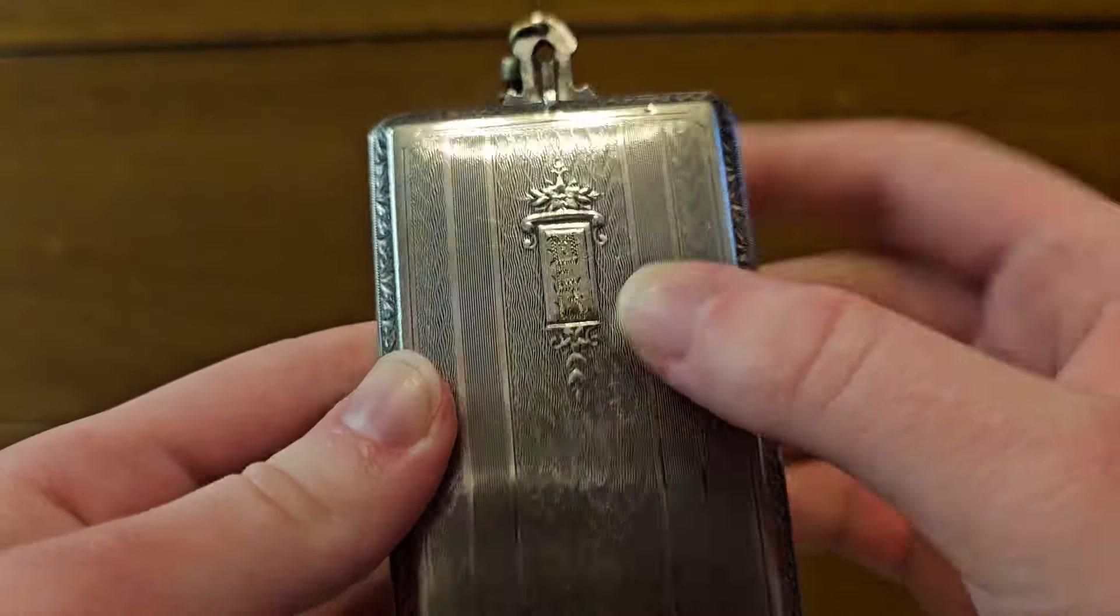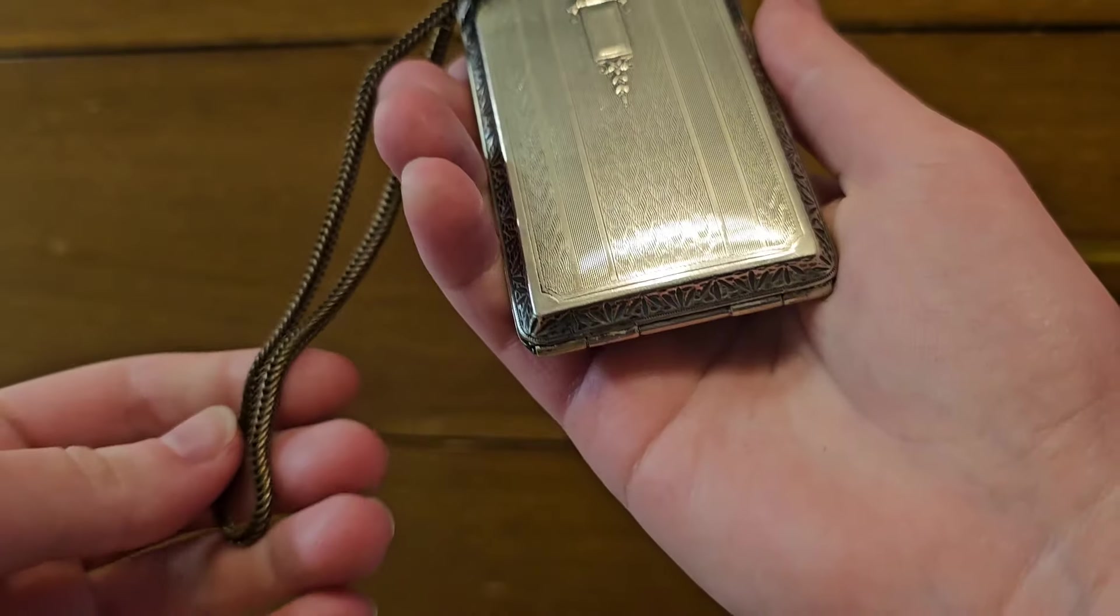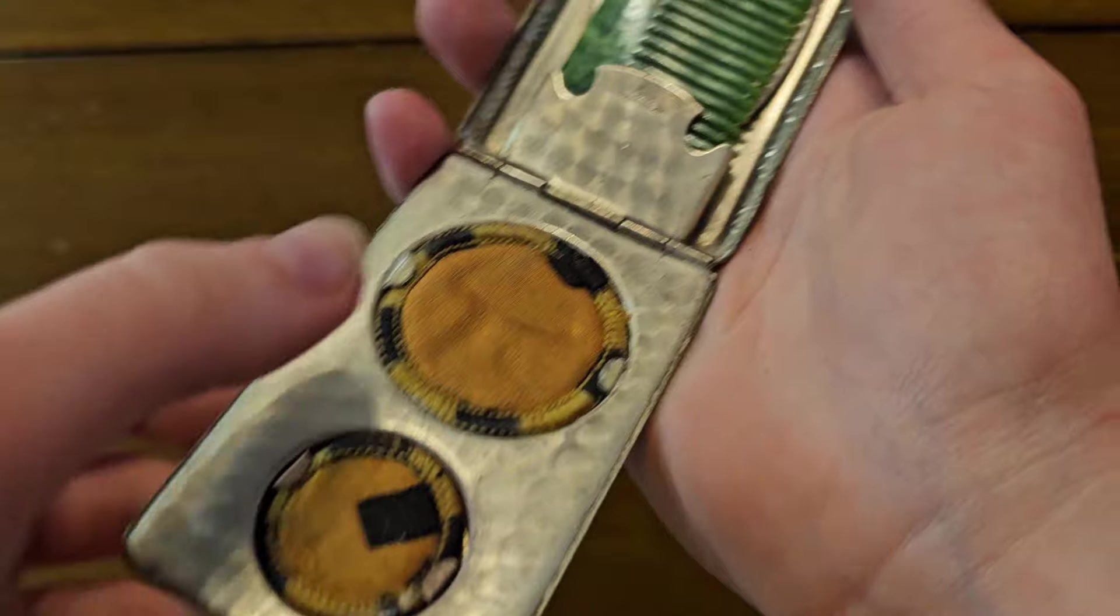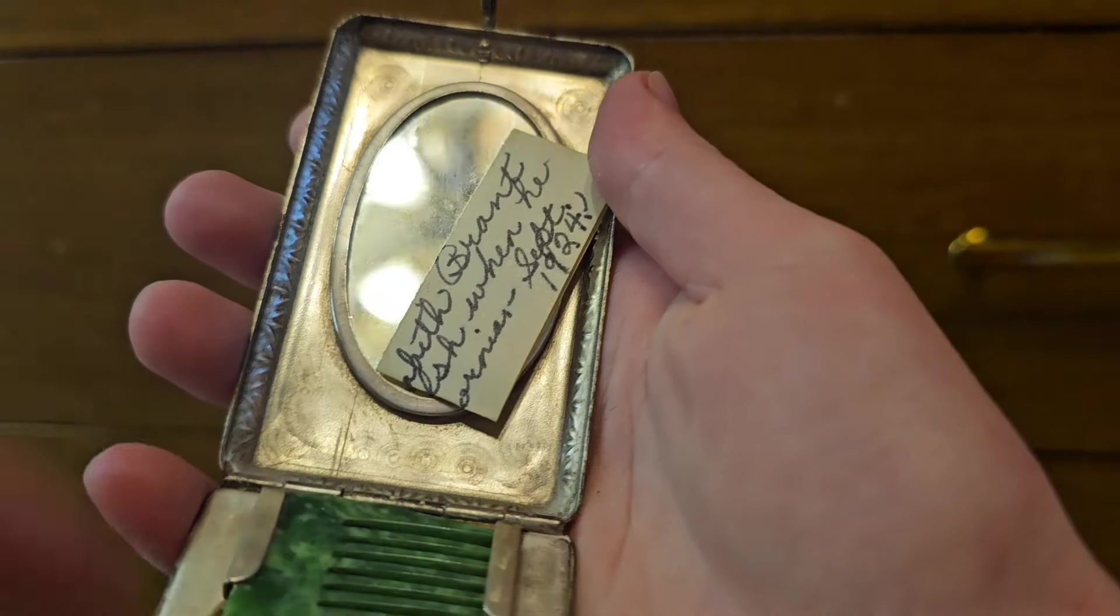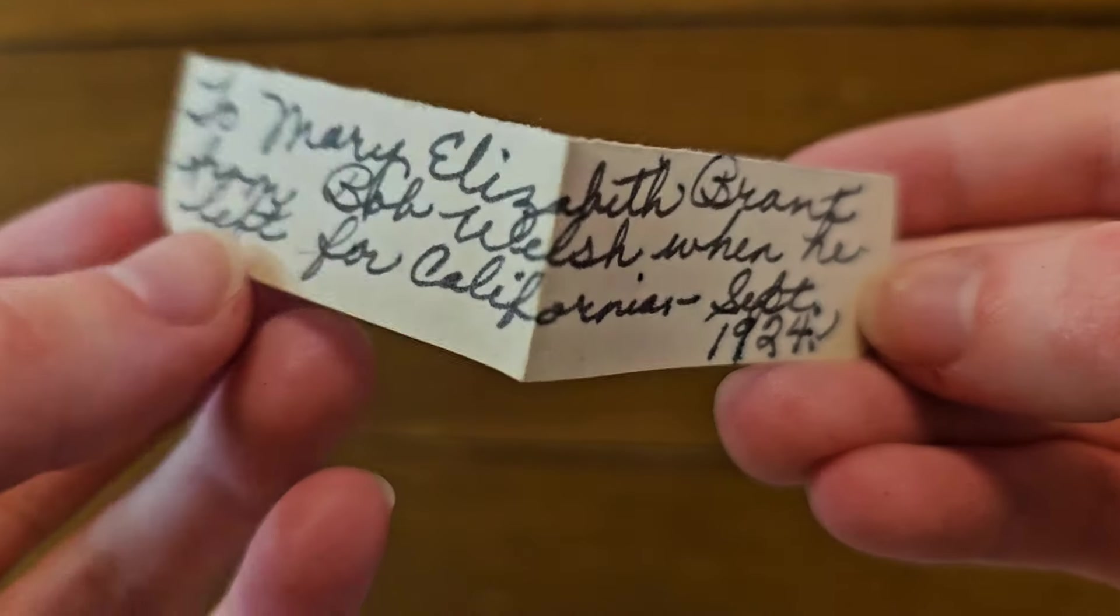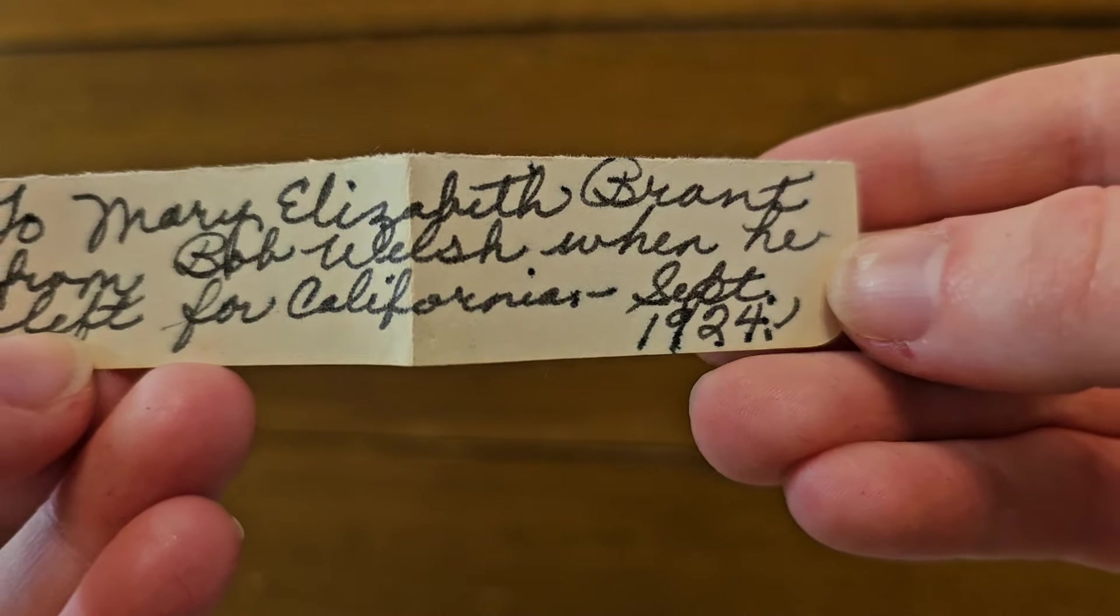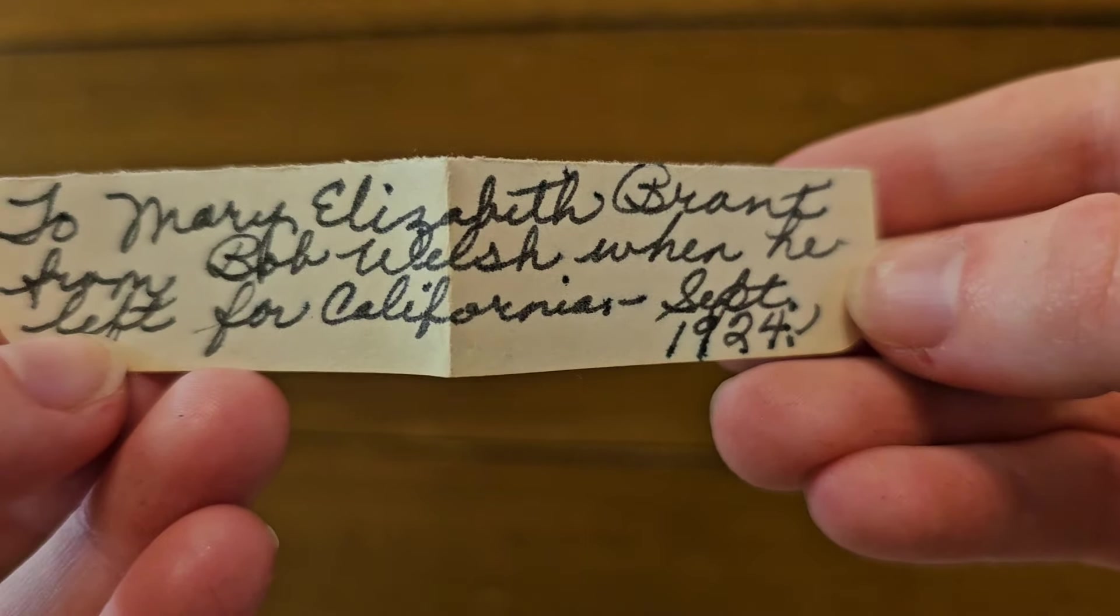And then this one. M.E.B. for Mary Elizabeth Brandt. This one does not have a tassel like the last one. Once again, rouge, powder, comb, note. And this one makes me sob. To Mary Elizabeth Brandt from Bob Welsh when he left for California, September of 1924. I just want to know, I just want to know their story. I want to know how this came to be. I want to know.